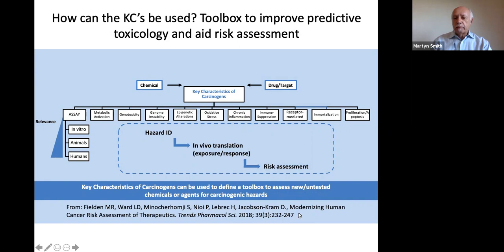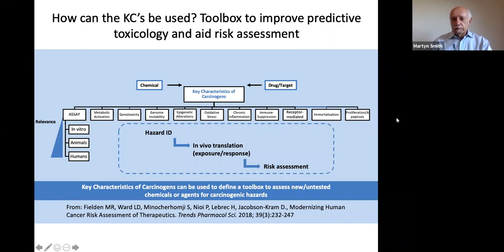This is of great interest to the pharmaceutical industry and also perhaps the chemical industry, in that they would really like an approach where they can reduce animal testing and do predictive toxicology. There's a paper by a group from Amgen who are very keen to develop these approaches and develop tests for the different key characteristics to modernize human cancer risk assessment and better predict carcinogenicity. So we are not alone in academia or consulting in our desire to improve toxicity testing — pharma has understood this could be very important and is moving forward with it.